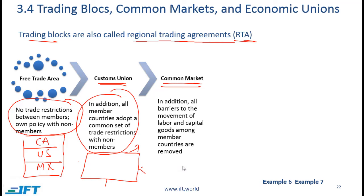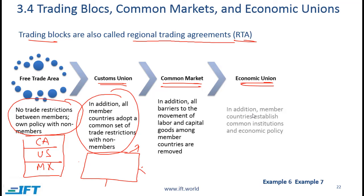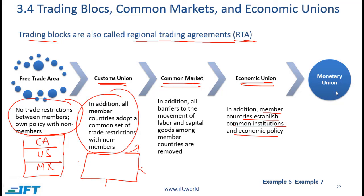An economic union is the next level, where member countries establish common institutions and economic policy. The final level is a monetary union, where all countries adopt a single currency — the classic example being the euro zone.